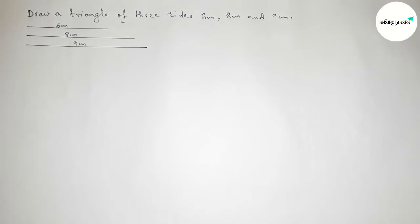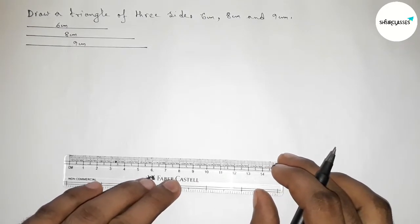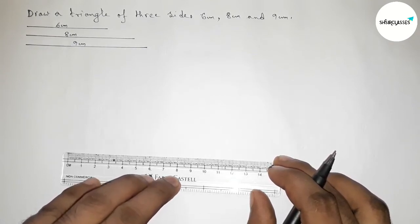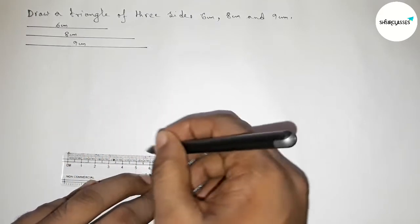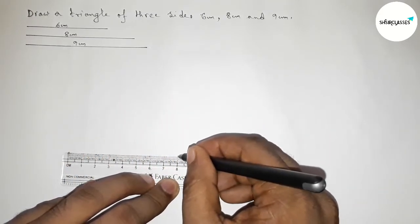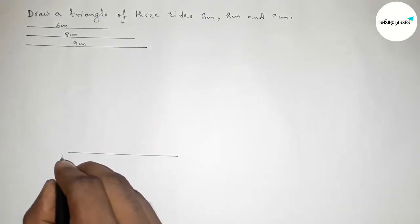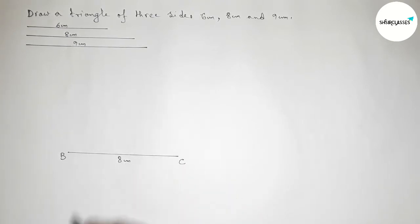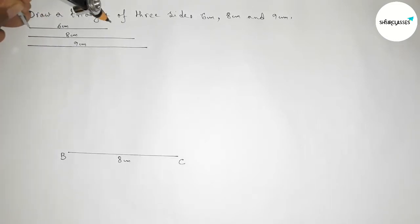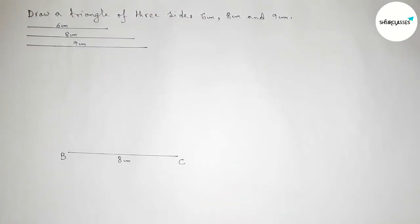Now first we have to draw a line of length eight centimeter. This is the eight centimeter line, taking point B here and point C here, so BC equals to eight centimeter.